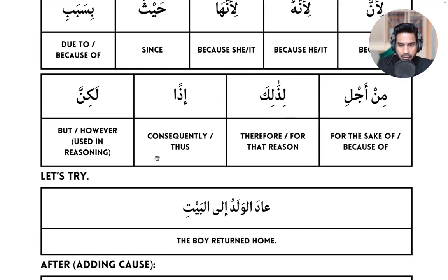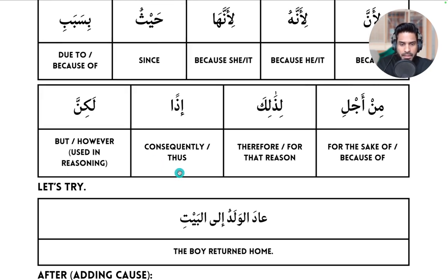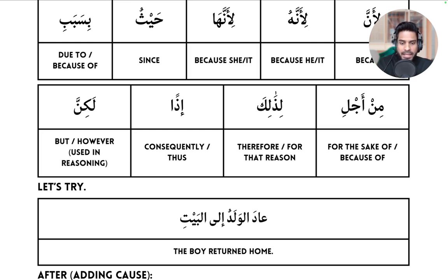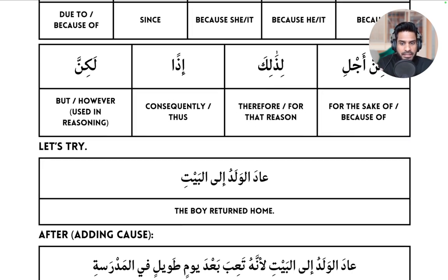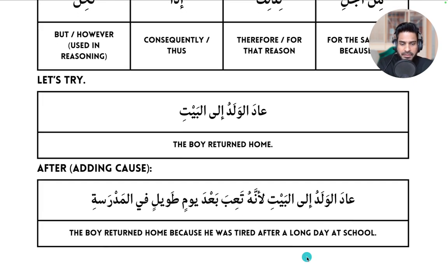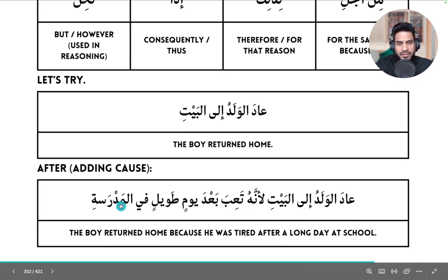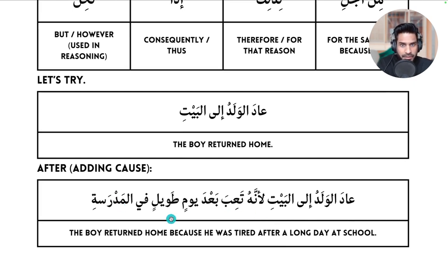Let's try a simple sentence. عَادَ الْوَلَدُ إِلَى الْبَيْتِ — 'The boy returned home.' وَلَدٌ means 'a boy,' dual وَلَدَانِ, plural أَوْلَاد. Now give a reason — add a cause and effect. You can see immediately the sentence becomes long because you have to include the cause and the effect.